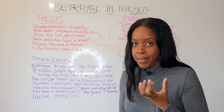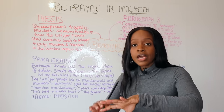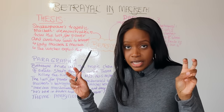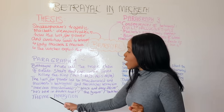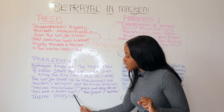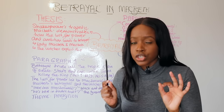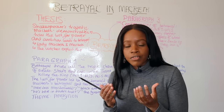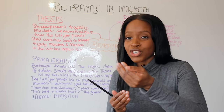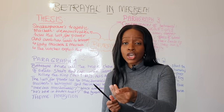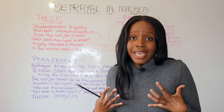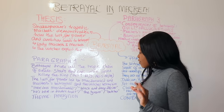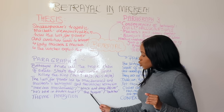Lady Macbeth influences Macbeth to kill the king, and in his soliloquy he considers his 'vaulting ambition.' The quotation 'he's here in double trust' shows Macbeth feels incredibly guilty — he wants to become king, but realises he will have to betray King Duncan, who has been such a good and loyal king to him and to all his subjects in Scotland.